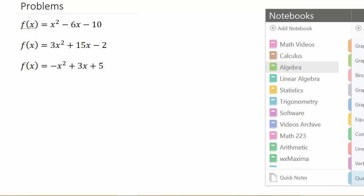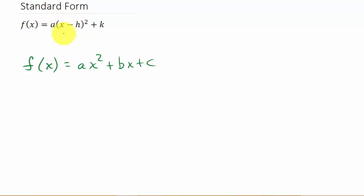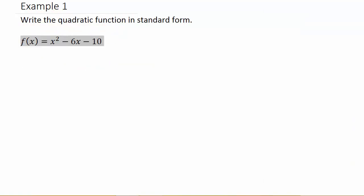Let's go ahead and get started. It's going to be in this form and we're going to convert it to this standard form. Let's look at example one. We have f(x) is equal to x squared minus 6x minus 10.